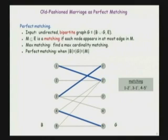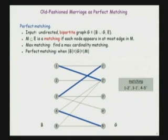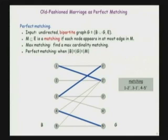So how could you do it? Let's say node 2 is unmatched — we could match it with 2 prime, but then we'd have to remove the existing marriage there, which would leave 1 unmarried. But then we could marry 1 to 1 prime, remove that marriage, and then marry 3 to 3 prime. So by removing two marriages we actually gain one more marriage, ending up with a larger matching.